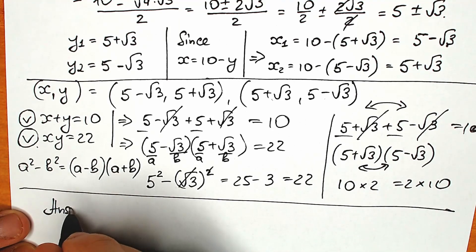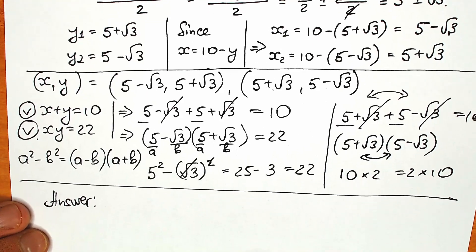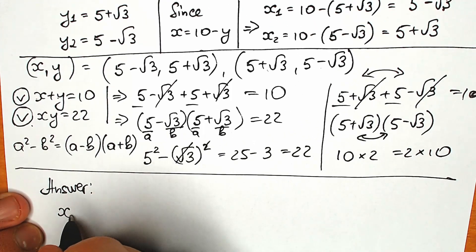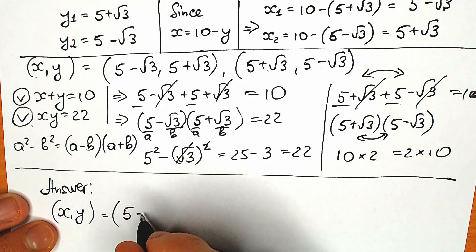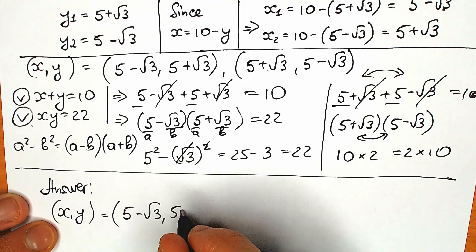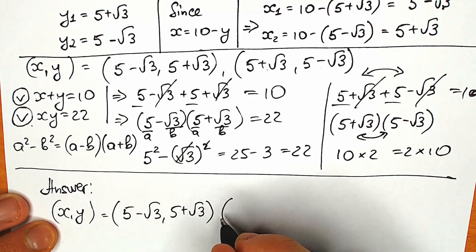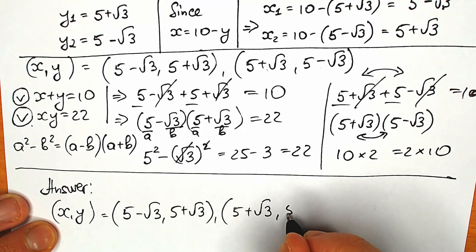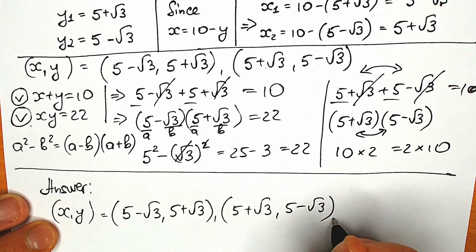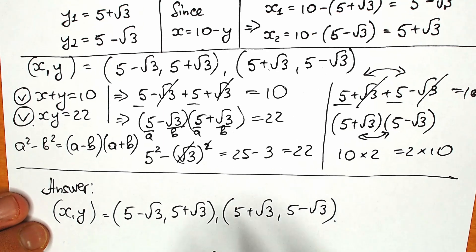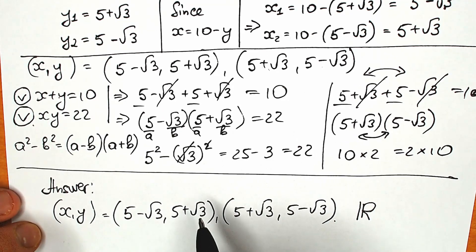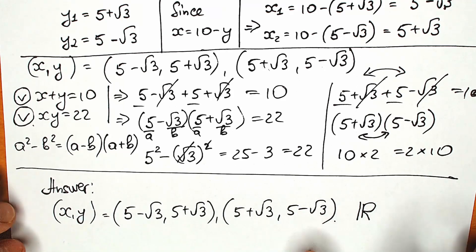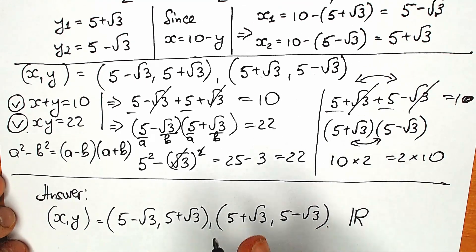So let's write our final answer to this question. I hope you understand it and learned something new. Our x and y have two pairs: (5 minus √3, 5 plus √3) and (5 plus √3, 5 minus √3). These are our real number solutions to this question — two pairs of real number solutions, which is really great.